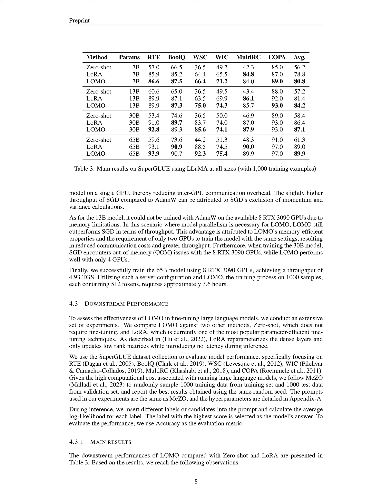The LOMO approach reduces memory usage during training by immediately updating parameters upon receiving gradients and discarding them from memory. It is compatible with activation memory reduction techniques and achieves remarkable throughput, surpassing AdamW and SGD by about 11 times for the 7B model. LOMO's memory-efficient properties allow for successful training of larger models with fewer GPUs, resulting in reduced communication costs and greater throughput.